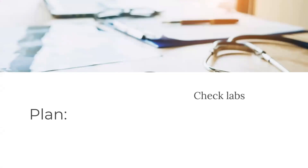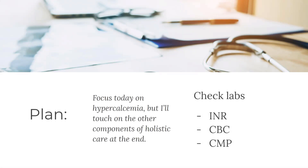The plan is to check her labs. We're going to check that her INR is therapeutic so we can consider stopping the Lovenox. We'll check a CBC because we don't have any labs from the hospital and want a baseline hematocrit and hemoglobin given the bleeding risk with Coumadin. I'm also getting a CMP to establish baseline renal and liver function.